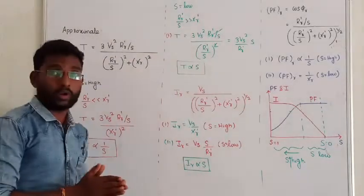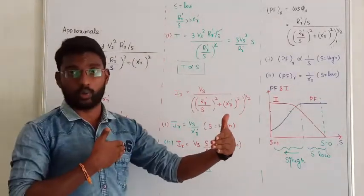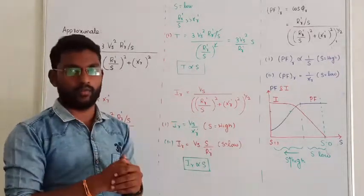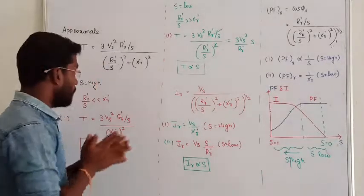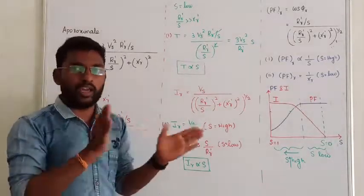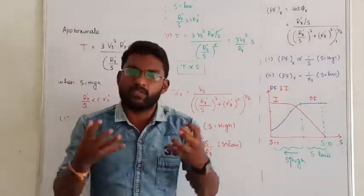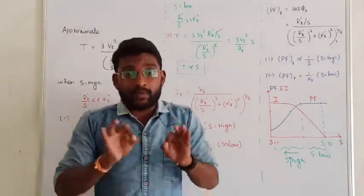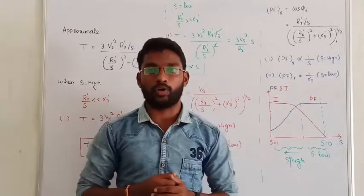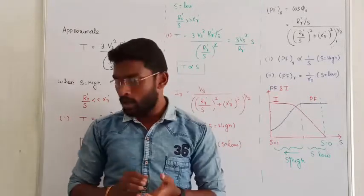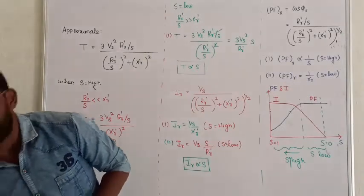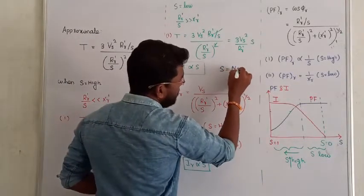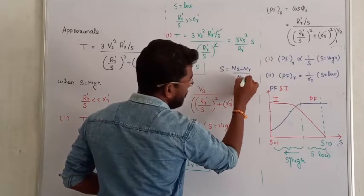The slip value usually lies between 0 to 1. If you look at the slip value, we will deal with it in two cases: when the slip is very less and when the slip is very high. Now, the slip formula is: slip equals (Ns - Nr) upon Ns.